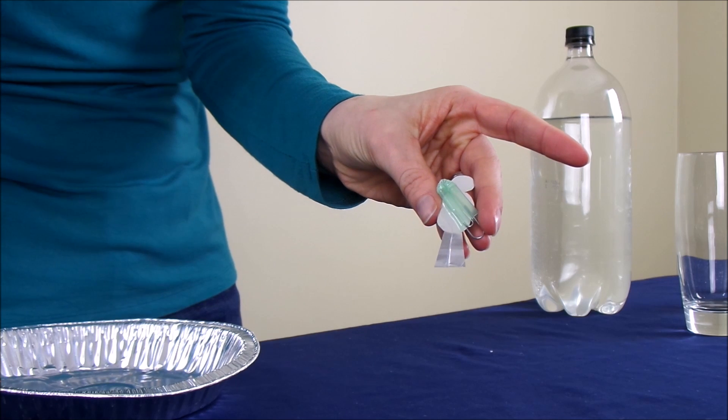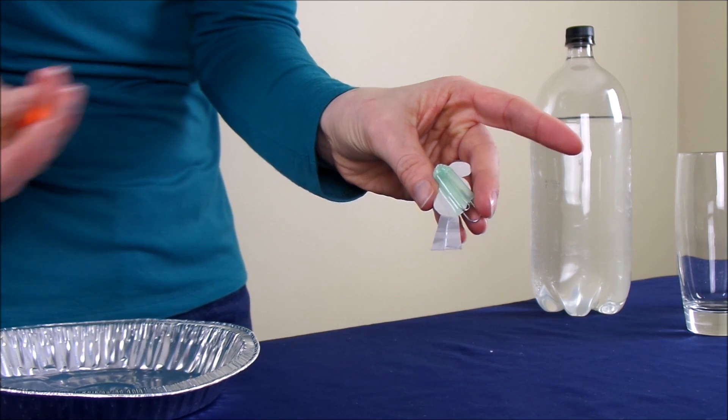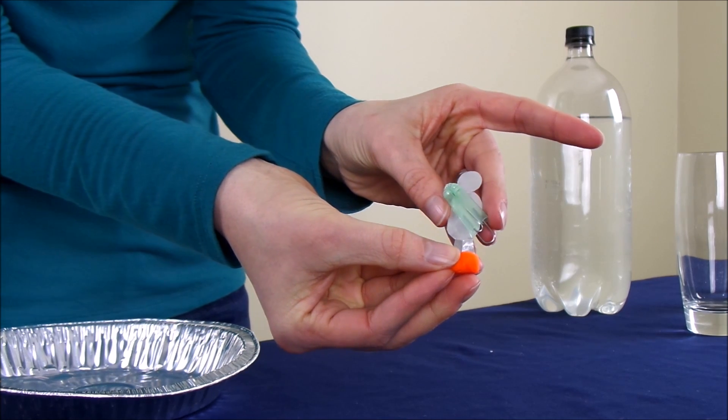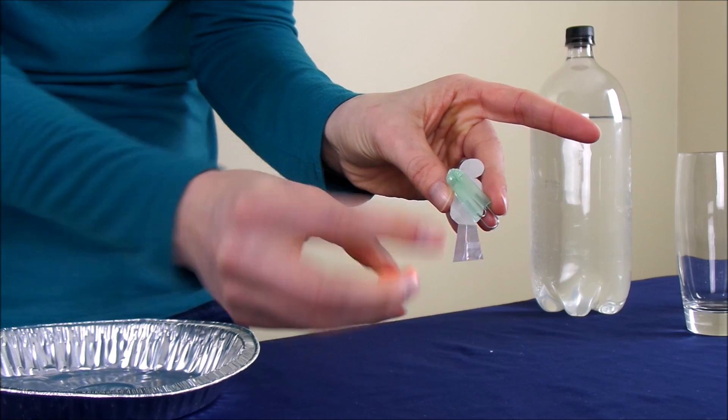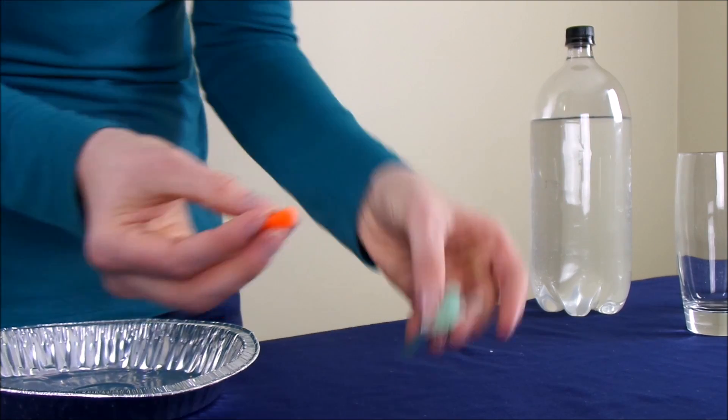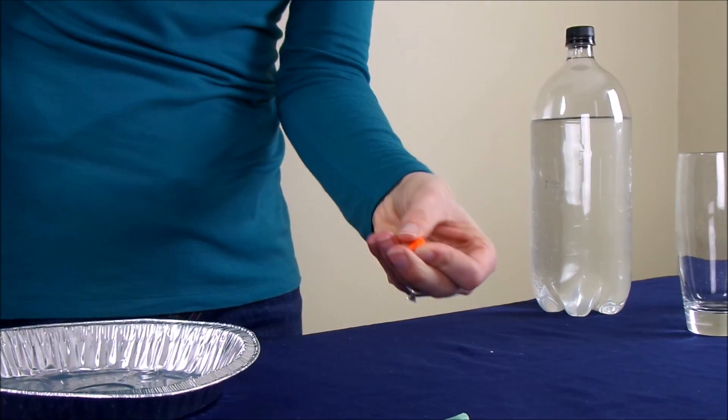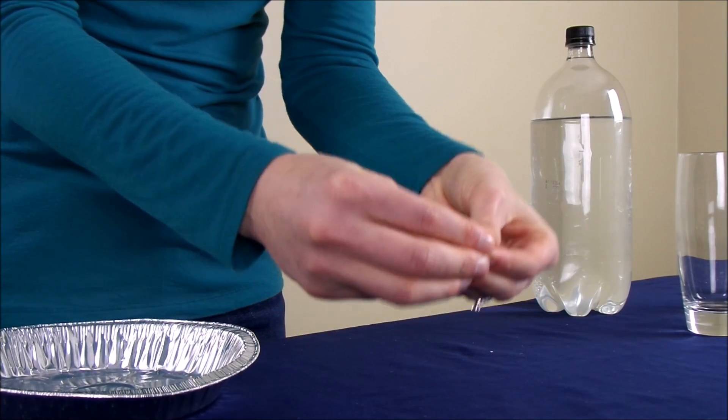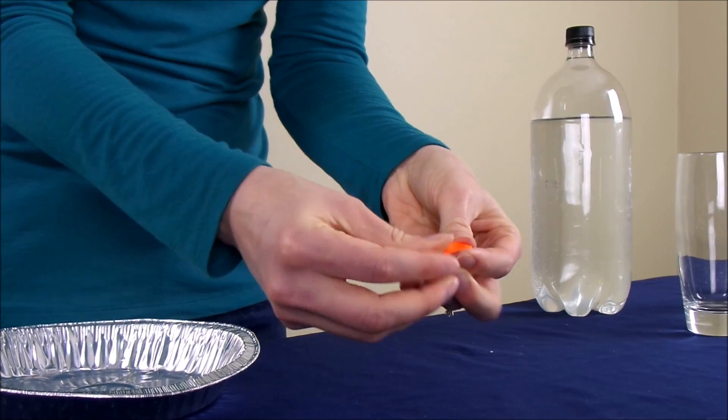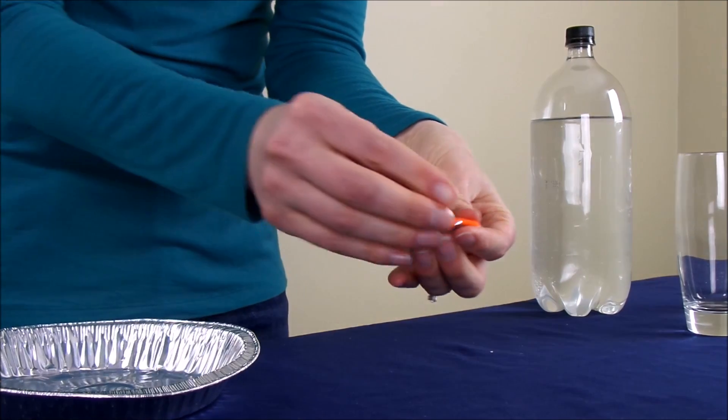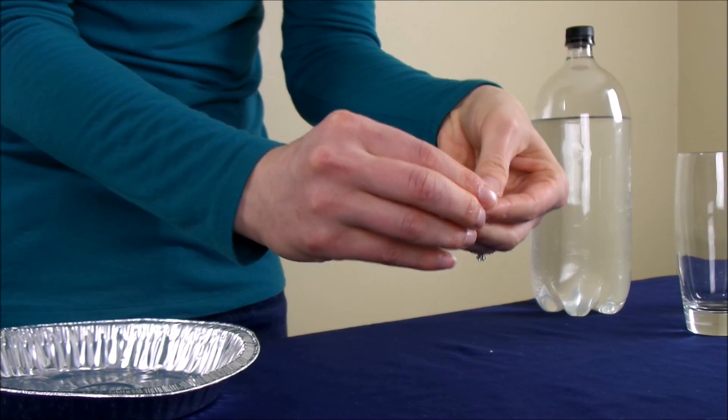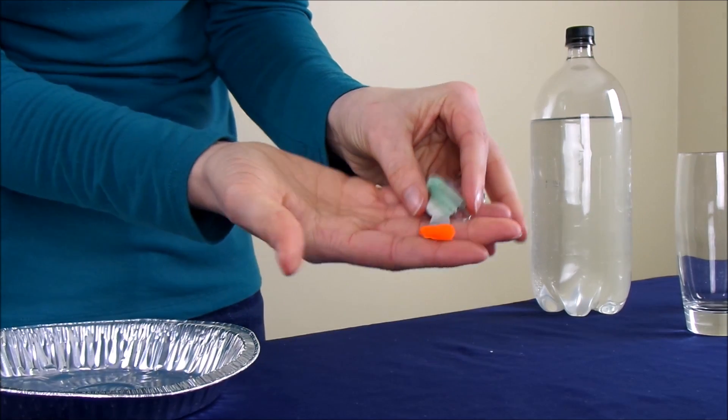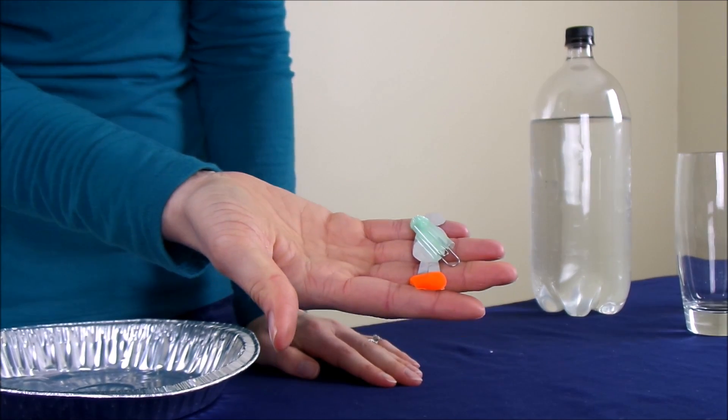The next step is to get your Play-Doh or putty, and you're going to put it on the feet of the diver. You want to make sure that you put it on the same side that the scuba tank is on. To do that, you're just going to take that Play-Doh or putty and mold it to the bottom of the foil and push it on there. It should stay pretty easily. If not, you can put a little drop of water on the back to get it to stick. Now we have our scuba diver.